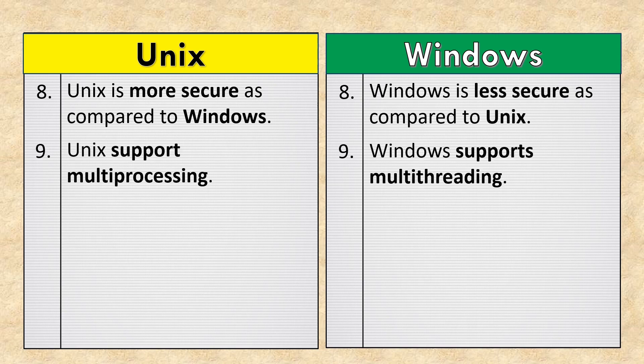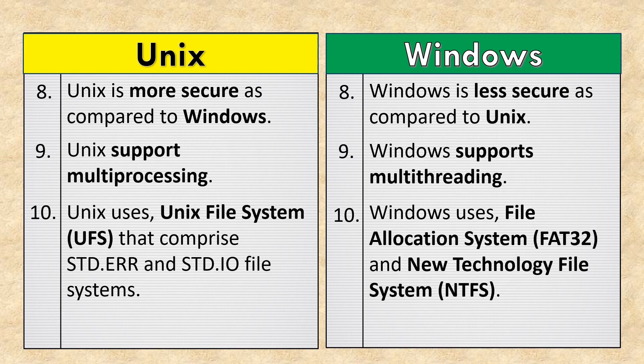Unix supports multiprocessing, while Windows supports multithreading. Unix uses the Unix File System (UFS), which comprises std.err and std.io file systems. Windows uses the File Allocation System (FAT32) and the New Technology File System (NTFS).